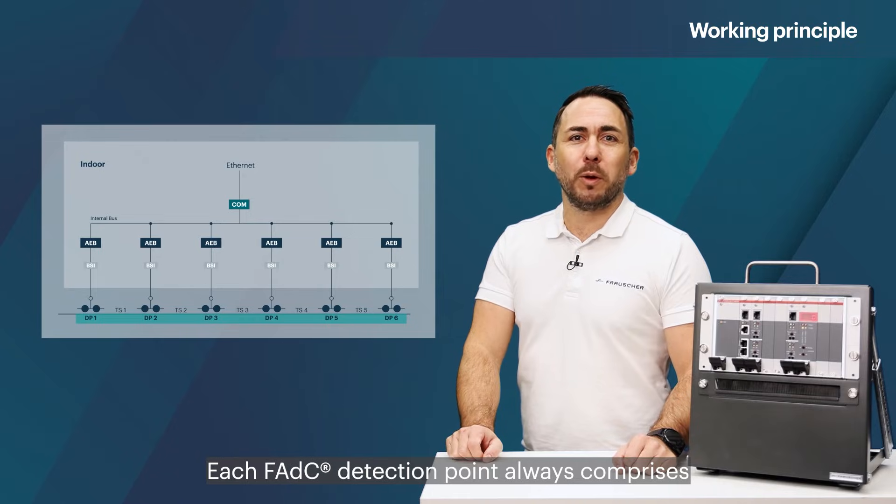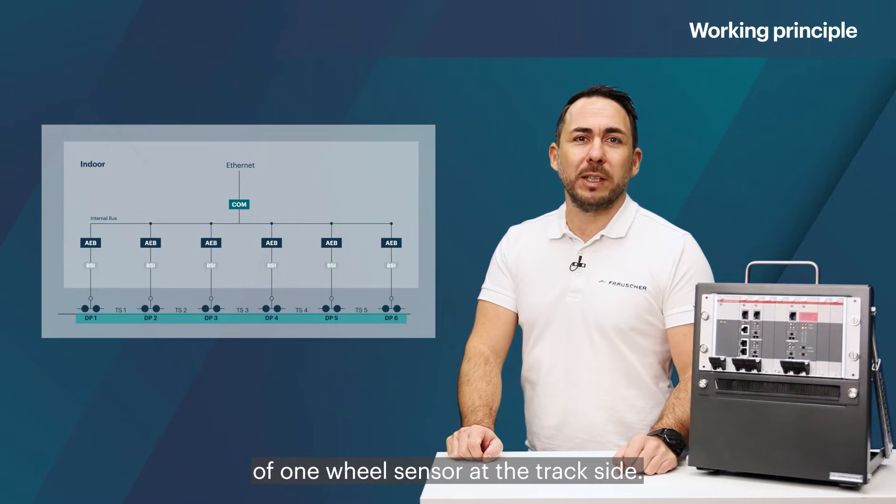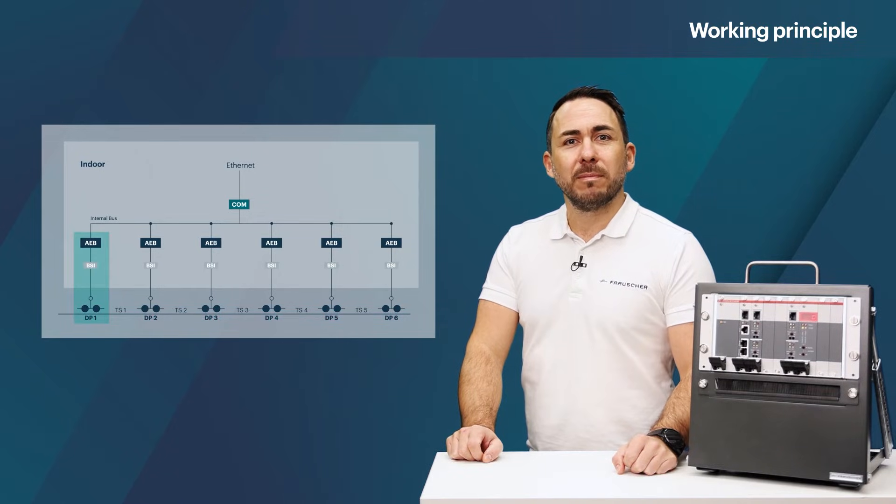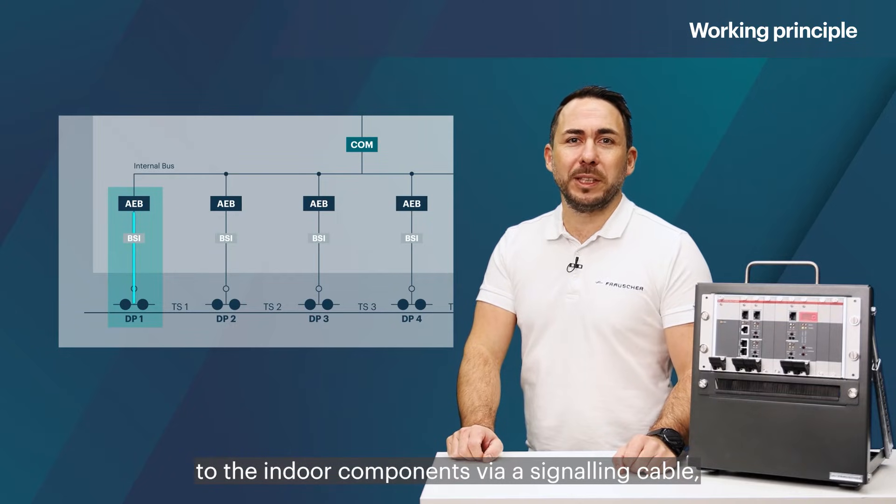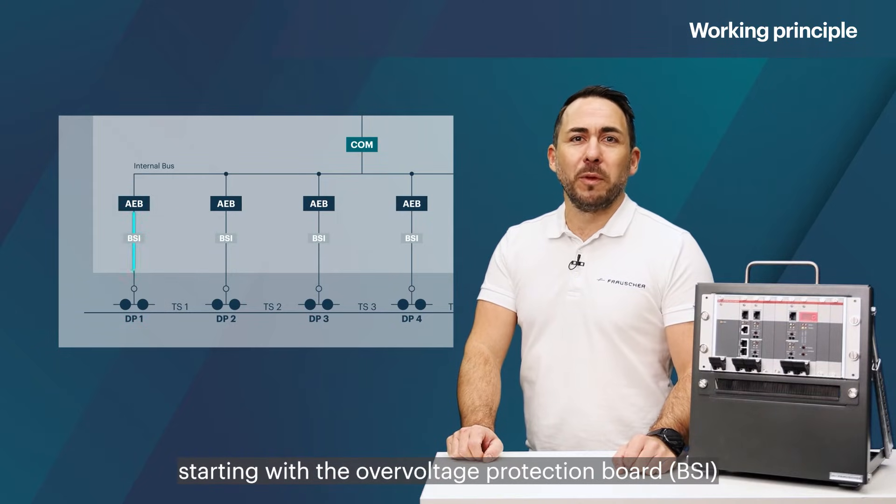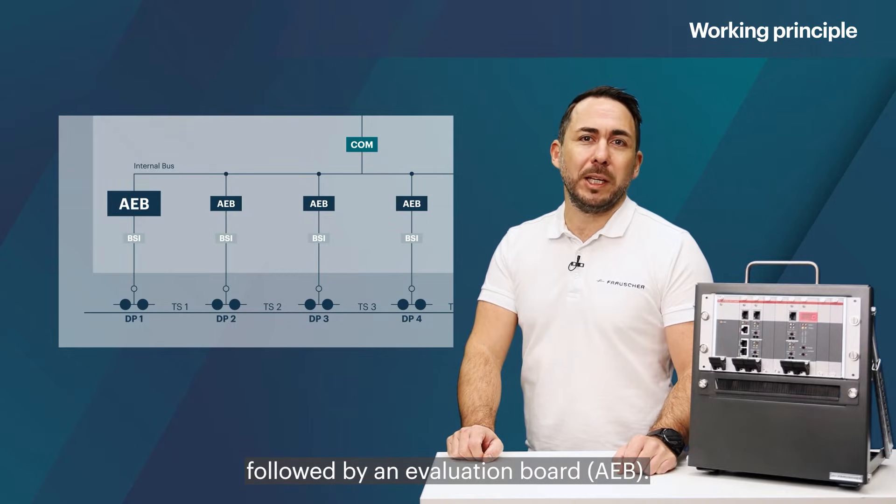Each FADC detection point always comprises of one wheel sensor at trackside. Furthermore, the wheel sensor is connected to the indoor components via a signaling cable, starting with the over-voltage protection board, BSI, followed by an evaluation board, AEB.